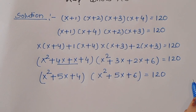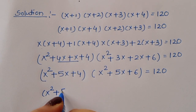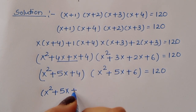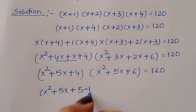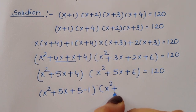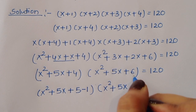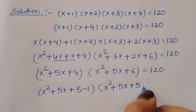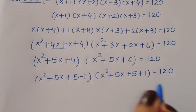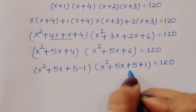Now we can do one thing here. We have x²+5x+4 and x²+5x+6. We rewrite 4 as (5−1) and 6 as (5+1). So the expression becomes (x²+5x+5−1)(x²+5x+5+1) = 120. Notice that x²+5x+5 appears in both terms.